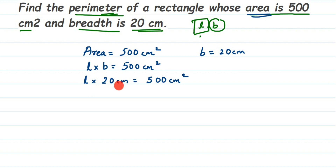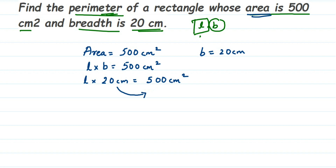Using the transpose method from algebra — when a number moves from one side of the equation to the other, multiplication becomes division. So we transpose 20 to the other side, and we'll divide 500 by 20 to get the length. If you haven't learned transpose yet, just think: what number multiplied by 20 gives 500?